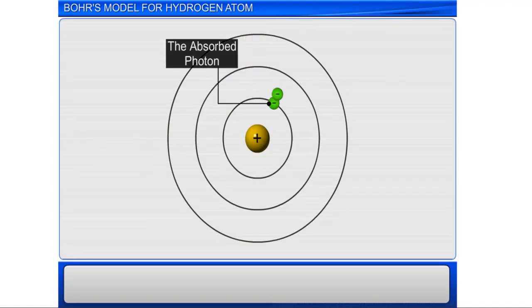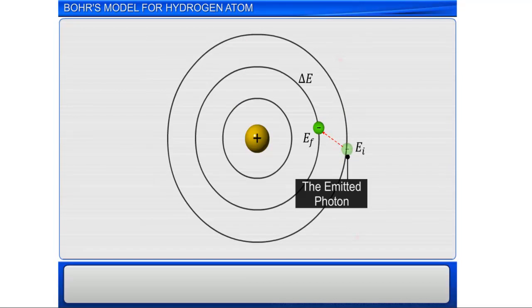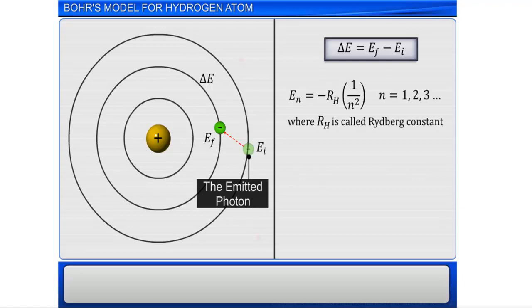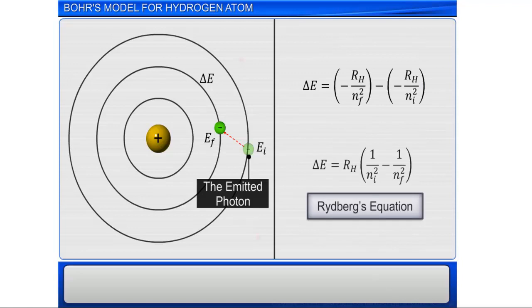According to the second postulate of Bohr's model, the energy gap between the two orbits is given by the equation delta E equals to E final minus E initial. Since the energy of a stationary state is given by the equation En is equal to minus of Rydberg's constant multiplied by 1 divided by n square, we can substitute E final in the energy change equation by minus RH divided by n final square, and E initial by minus RH divided by n initial square, to get an equation similar to the expression used by Rydberg.